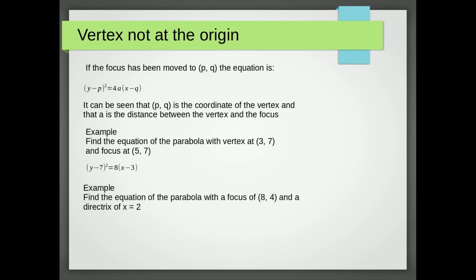Another example: find the equation of the parabola with a focus of (8, 4) and a directrix of x = 2. The vertex is midway between the directrix and the focus, so the vertex is at (5, 4). That means p = 5 and q = 4. The distance between the vertex and the focus is three, so the equation is (y − 4)² = 12(x − 5), because 4 × 3 = 12.